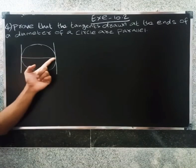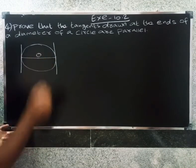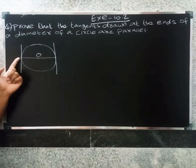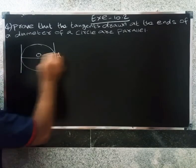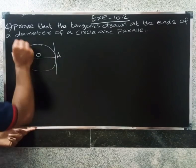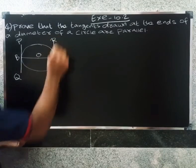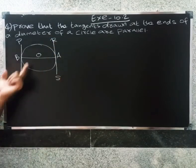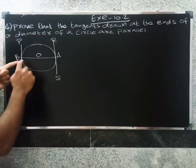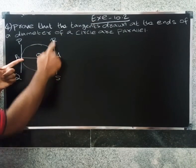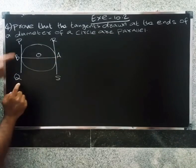So, tangents drawn at the ends of a diameter. The diameter has endpoint P and endpoint Q. Tangent at point P, tangent at point Q — these are the tangents at the ends of the diameter of the circle.